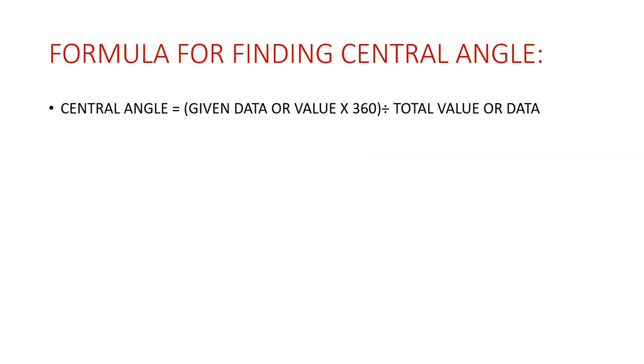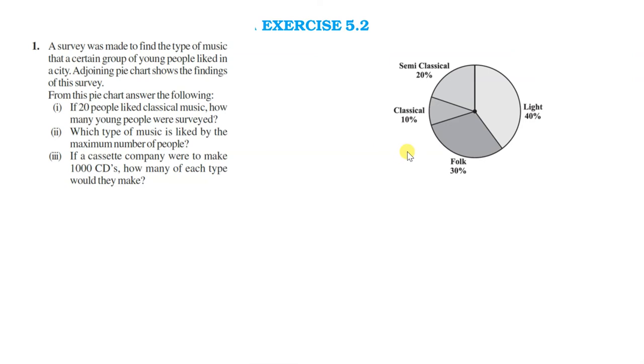Let us do the first question of the exercise. A survey was made to find the type of music that a certain group of young people liked in a city. The adjoining pie chart shows the findings of this survey. In a city, a survey was made on a certain group of people and which type of music they liked is shown by this pie chart. Like 10 percent like classical music, 20 percent like semi-classical music, 40 percent people like light music, and 30 percent people like folk music.